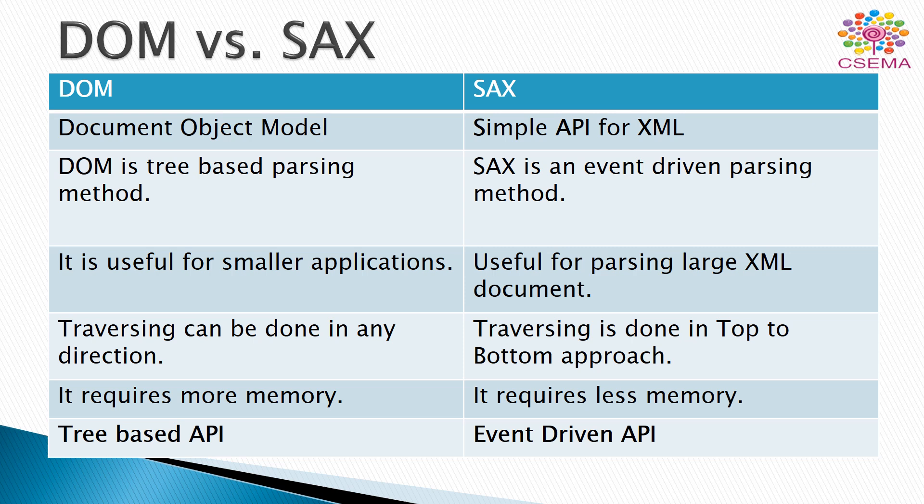All the processing, accessing, and controlling responsibilities are handled by DOM and SAX. DOM is the tree-based parsing method, in which if we have any XML document or content, DOM creates a tree for that content. SAX, on the other hand, is an event-driven parsing method.